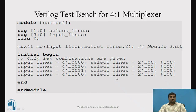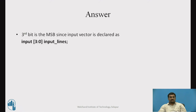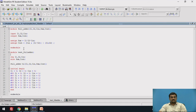Before going to the actual simulation, pause the video for one minute and write down the answer to the given question. The answer is: the third bit is the MSB, since the input vector is declared as input [3:0] input_lines. The third bit will be the MSB bit whereas the zeroth bit will be the LSB bit.